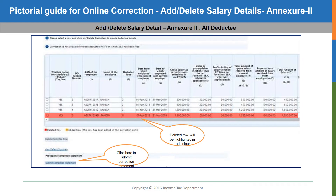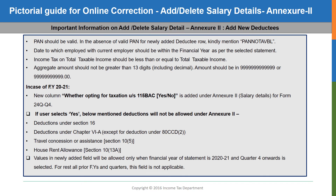The deleted deductee details will be highlighted in red color. You can directly click on the submit correction statement button if you only have to delete the wrong deductee detail. But quite often, the correction needed will be editing the wrong details. So to give the correct details, you have to add the deductee details as well, by which only the correction statement will be complete. Sometimes a deductor will have to enter new deductee details which were omitted by mistake in the original statement. For both these purposes, the add new deductee feature can be used. These points may be noted while adding a new deductee detail in the correction statement: the PAN should be valid. In the absence of a valid PAN for a newly added deductee row, kindly mention PAN NOT AVBL — this code is 10 characters, same as PAN length, and clearly indicates that the PAN is not available.